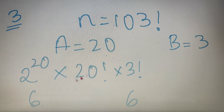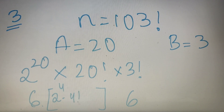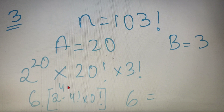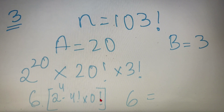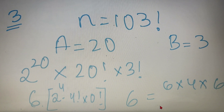Repeating the process for 20 factorial: a is equal to 4 and b is equal to 0. So I have to find the last non-zero digit of 2 to the power 4, into 4 factorial, into 0 factorial. My final answer becomes 6 into the last non-zero digit of that expression. Now, 2 to the power 4 is 16, so the last digit is 6. 4 factorial is 24, so the last digit is 4, and 0 factorial is 1. So we have 6 into 4 into 1, which is 24 — last digit 4. My final answer is therefore the last digit of 6 into 4 into 6, which gives 144, so the last digit is 4.